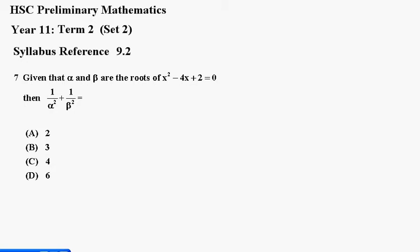Question 7. Given that alpha and beta are the roots of x squared minus 4x plus 2 equals 0, then 1 over alpha squared plus 1 over beta squared equals a, b, c, or d.